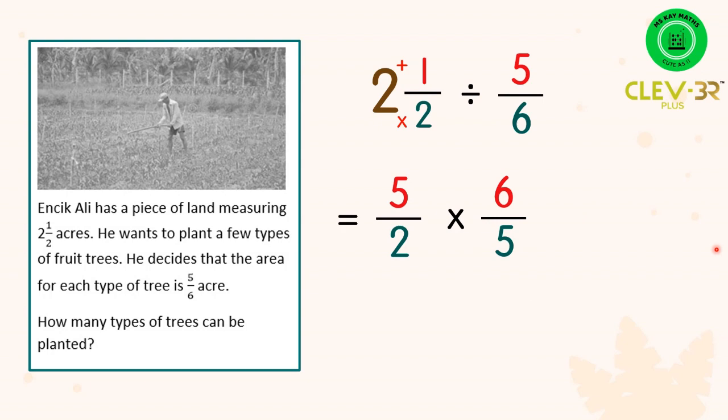So for this equation we can simplify the fractions using the cancelling of numbers. When we have the same numbers in the same multiplication tables we can divide the numbers. So 5 and 5 we can divide by 5.